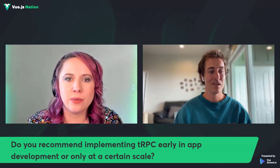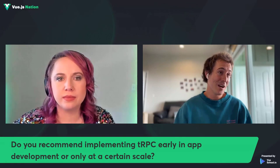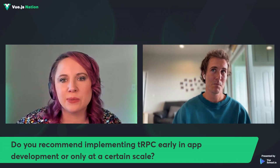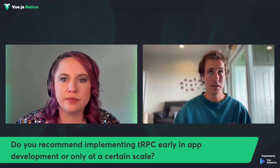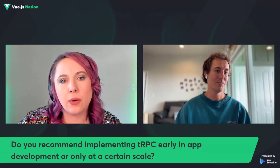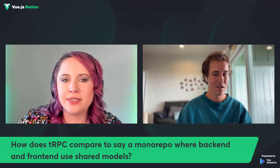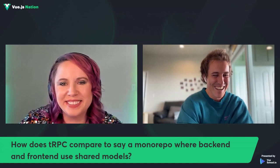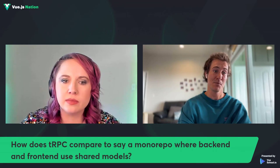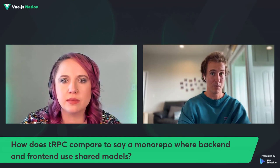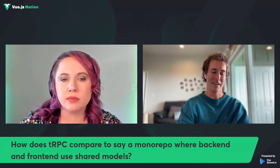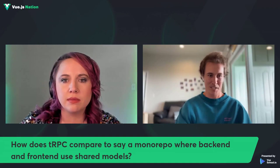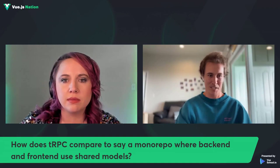Is there a timeframe where you suggest somebody implements TRPC when they're developing? Right when you start — why not? I think that's probably going to be your best bet. I don't see any reason in delaying it. How does TRPC compare to a monorepo where backend and front end share models? Monorepos are something that's on my radar and I haven't explored them fully, so I don't know how much of the typing they share. I'm assuming they're asking because there is a bit of type safety occurring between the two, but I'm not sure.